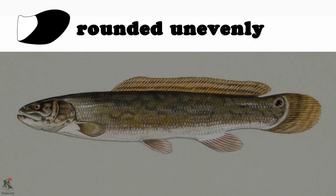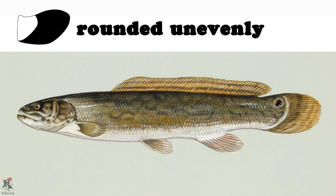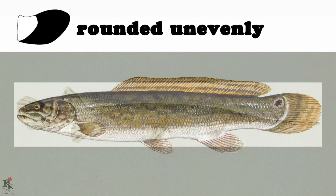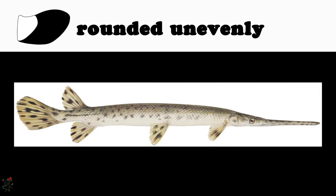Rounded unevenly — we find this tail on species like the bowfin, as well as on the long-nosed gar.